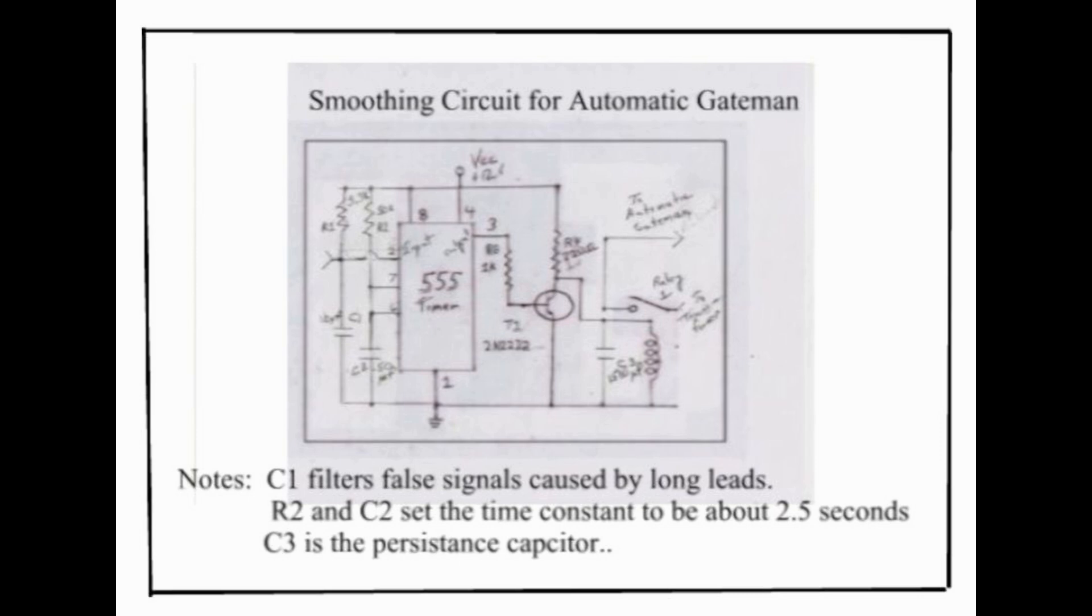Please note that C1 filters false signals caused by long leads. Next, notice that R2 and C2 set the timer constant to be about 2.5 seconds for the timing chip. And finally, C3 is the persistence capacitor that makes sure the operation is smooth.